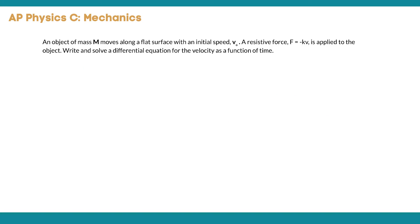In this problem we have an object of mass m moving along a flat surface with an initial speed v naught, and as it moves a resistive force equal to negative kv is applied to the object. We're going to write and solve a differential equation for the velocity as a function of time.